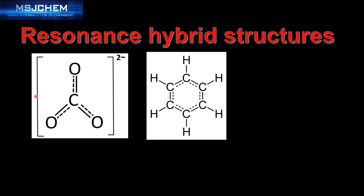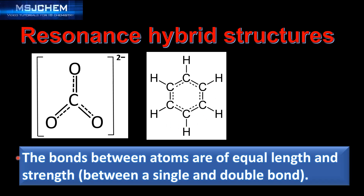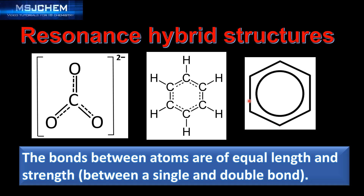Here we have the resonance hybrid structures of the carbonate ion on the left and the benzene molecule on the right. In the resonance hybrid structure, the bonds between atoms are of equal length and strength, intermediate between a single and a double bond. The benzene molecule is often depicted as a hexagon with a circle in the middle, and the circle represents delocalized pi electrons.